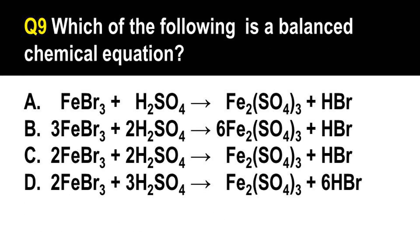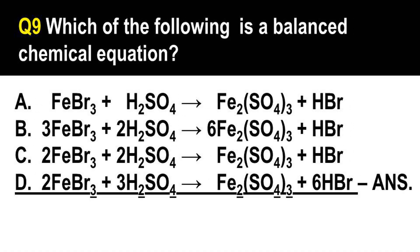Which of the following is a balanced chemical equation? The correct answer is letter D. This applies the law of conservation of mass — we must have the same number of atoms for every element on each side of the equation. In option D, there are 2 iron atoms, 6 bromine atoms, 6 hydrogen atoms, 3 sulfur atoms, and 12 oxygen atoms on both the reactant and product sides.